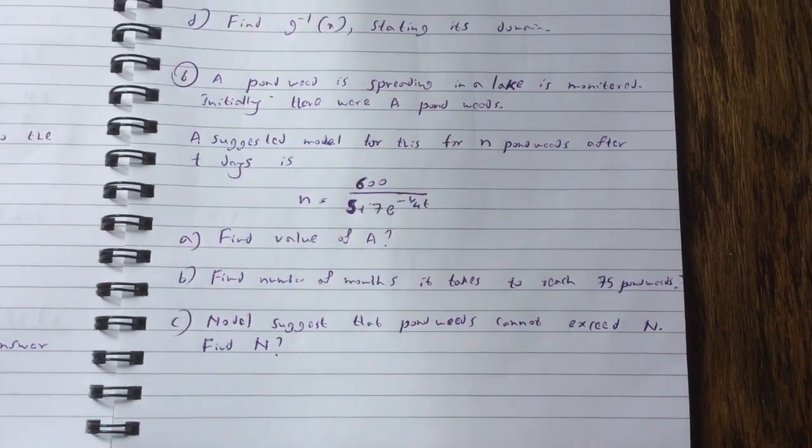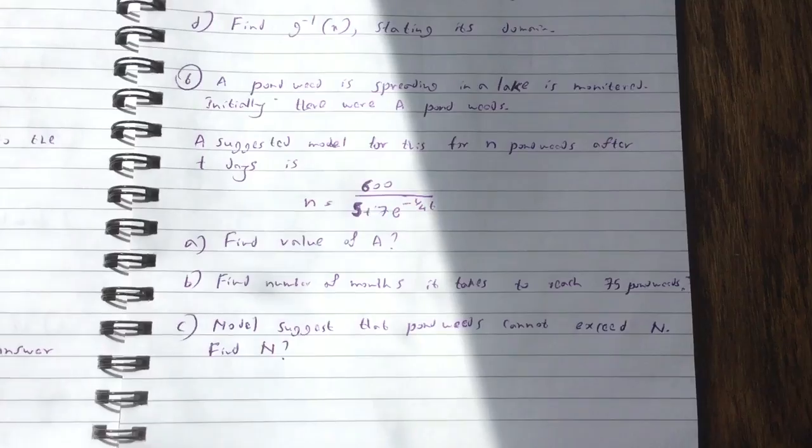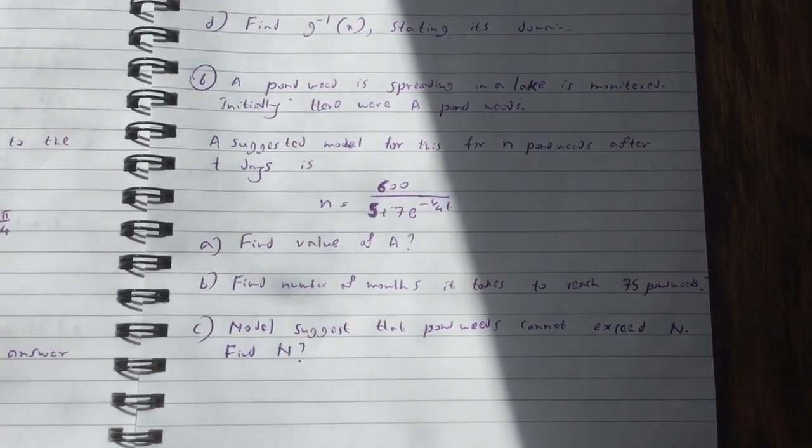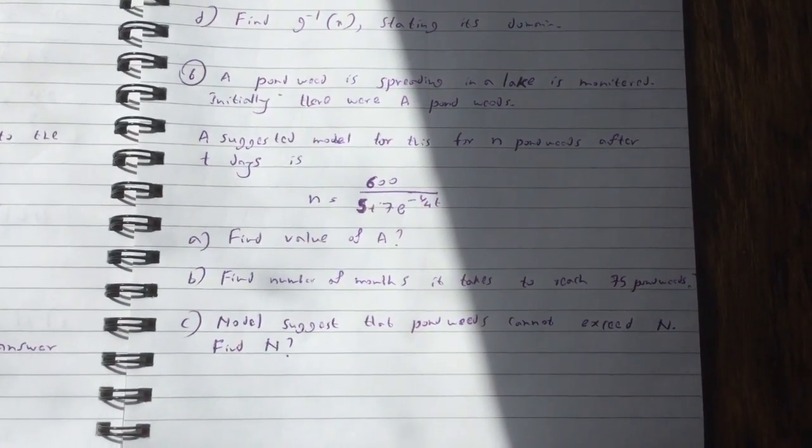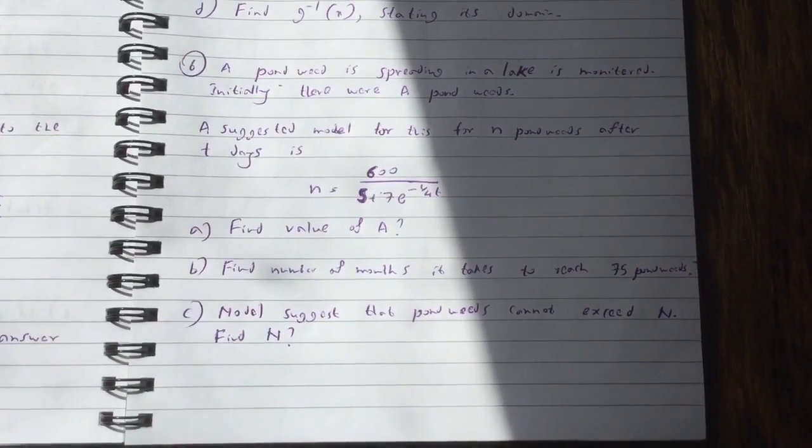Question A, find value of A. Question B, find number of months it takes to reach 75 pondweeds. Question C, model suggests that pondweeds cannot exceed n. Find n.